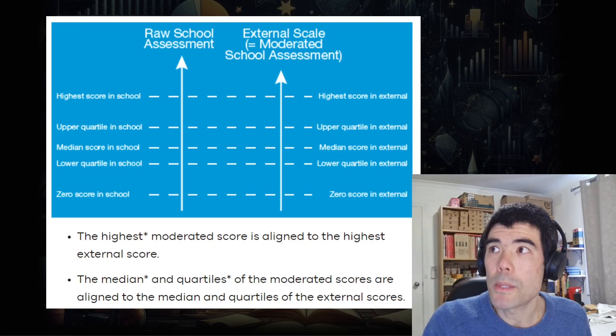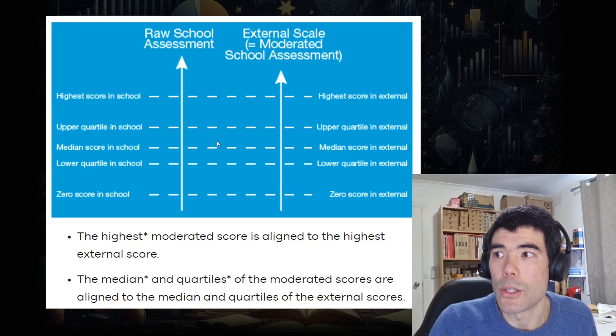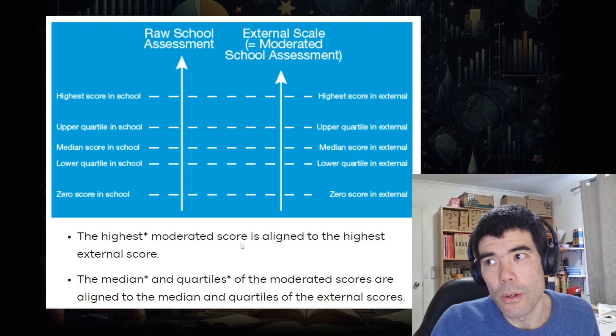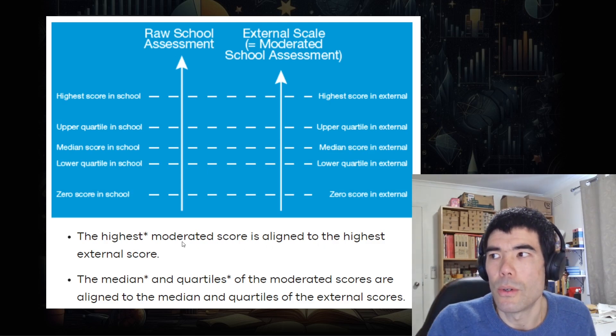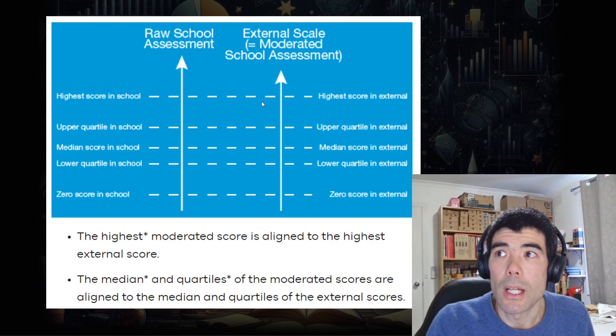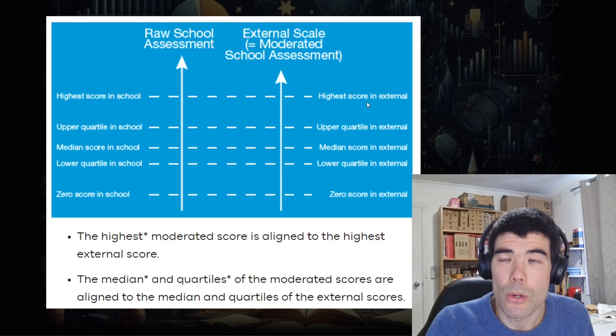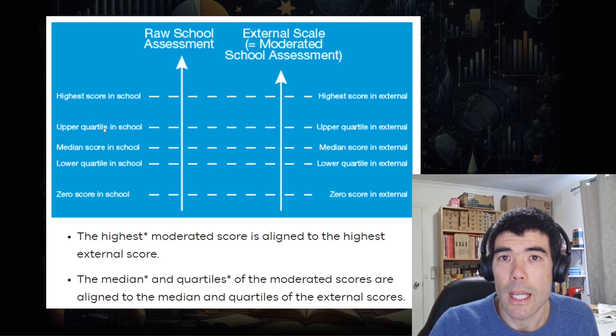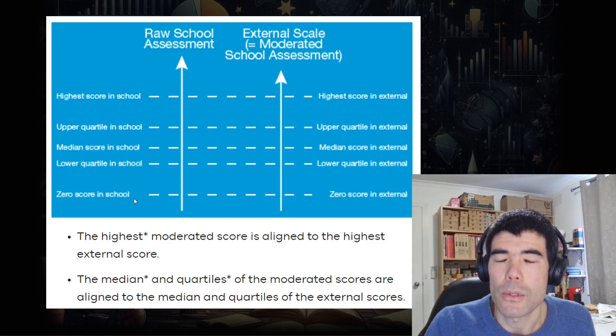So this is from the VCAA website where they publish about how they do the moderation. They tell us that the highest moderated SAC score is aligned to the highest external score. So the top rank SAC score will be given a SAC score which aligns with the top exam score in that school. And this is a similar thing for the median, the upper and lower quartiles and the bottom score.